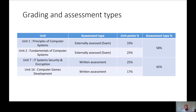Grading and assessment types: Unit 1 and Unit 2 are both examined units. The examined units equate to 58% of the overall mark. Unit 7 and Unit 14 are written assessments and equate to 42% of the overall mark.